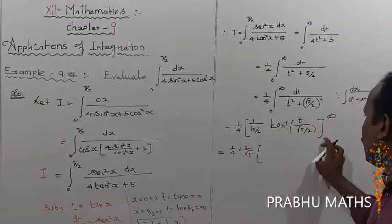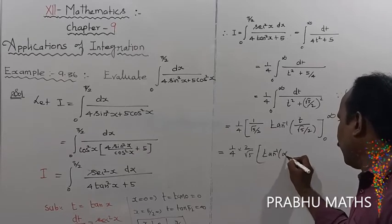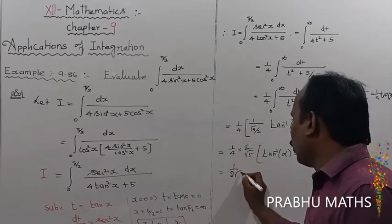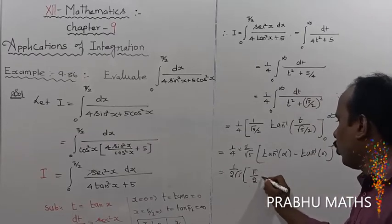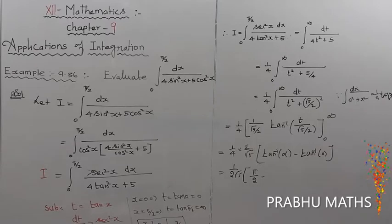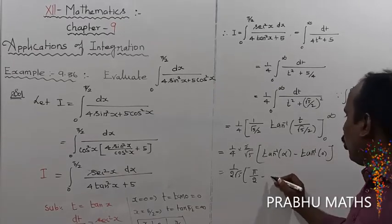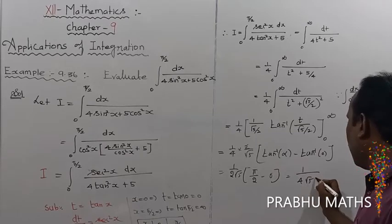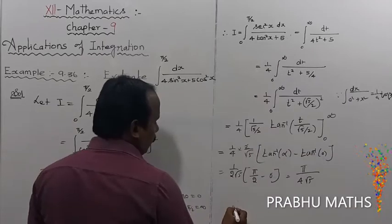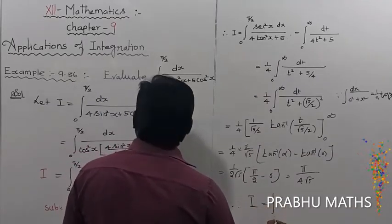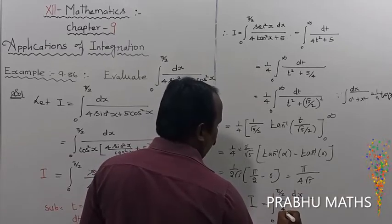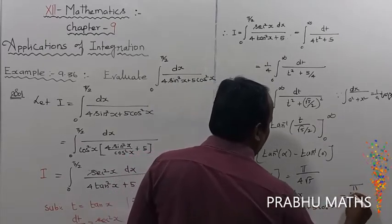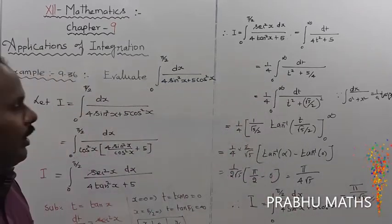Applying the limits: tan⁻¹(infinity) equals 90 degrees equals pi/2, and tan⁻¹(0) equals 0. So the result is 1/4 times (2/root 5) times (pi/2 minus 0), which equals pi divided by 4 root 5. Therefore I equals the integral from 0 to pi/2 of dx divided by 4 sin²x plus 5 cos²x equals pi divided by 4 root 5.